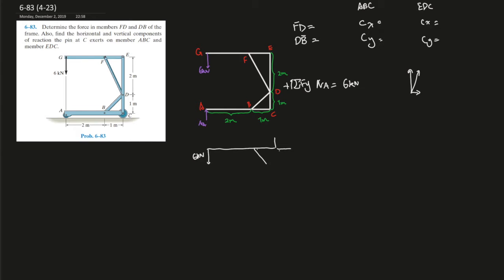So we can draw this entire frame, each component, and sort of deduce the directions. If we analyze this frame from its real-life situation, we can determine the internal forces. The 6 kN force is making a downward push, so it's making the entire system rotate counterclockwise, and these two forces are stopping that from happening. This force is being compressed by the triangle and the stability that AFF creates. So we know this force is going in the opposite direction — it's being compressed, and if a member is compressed, its reaction is to push away.